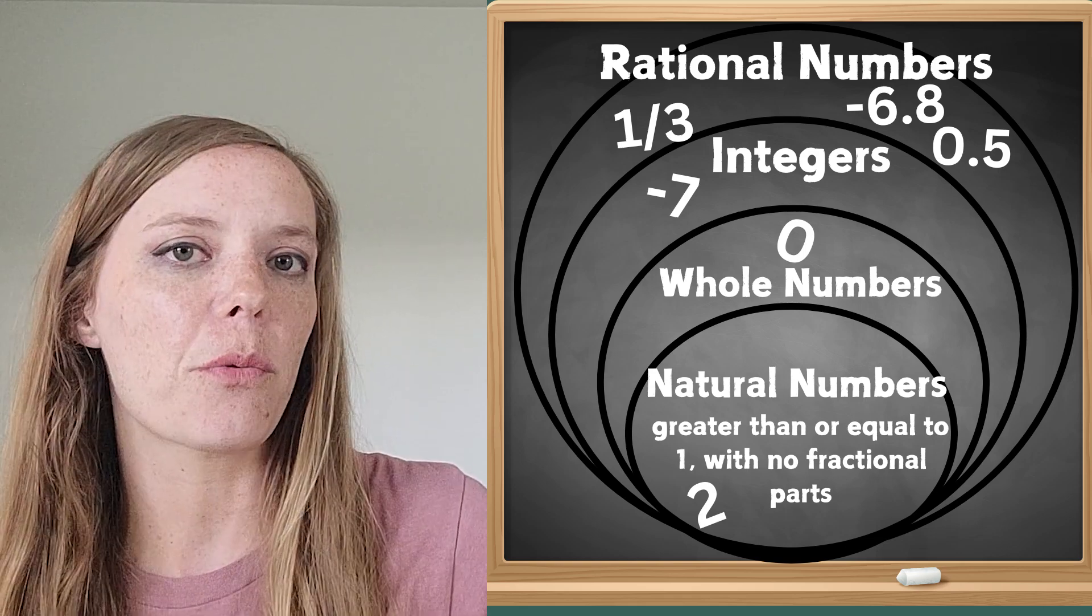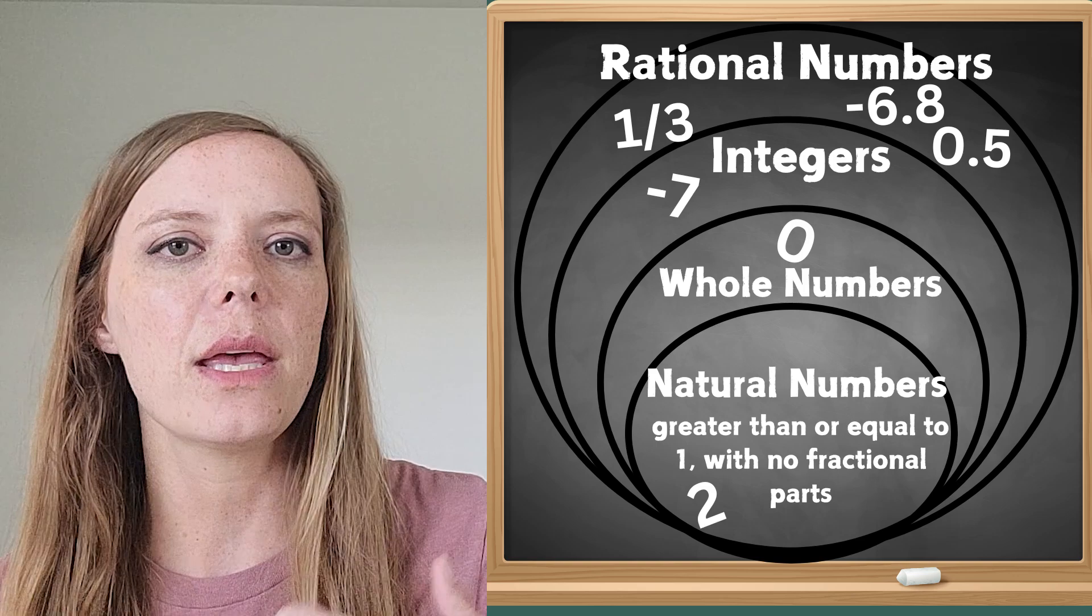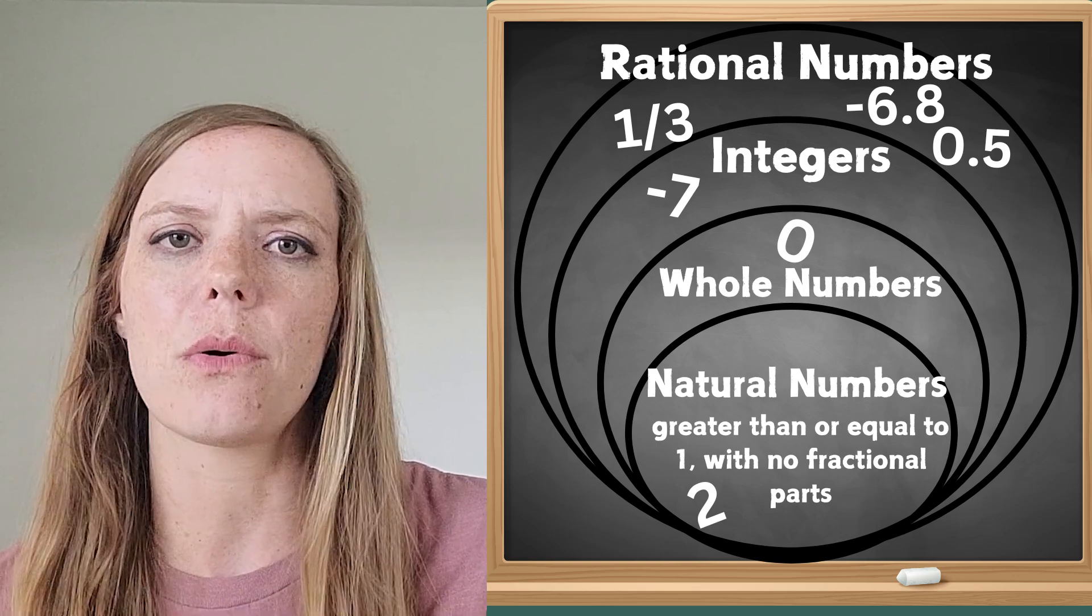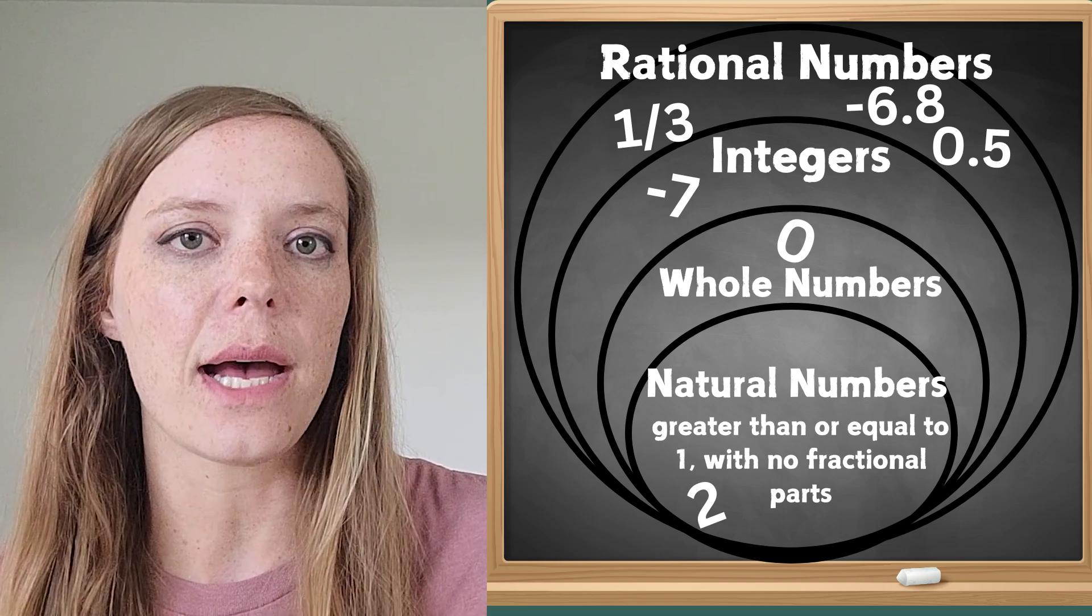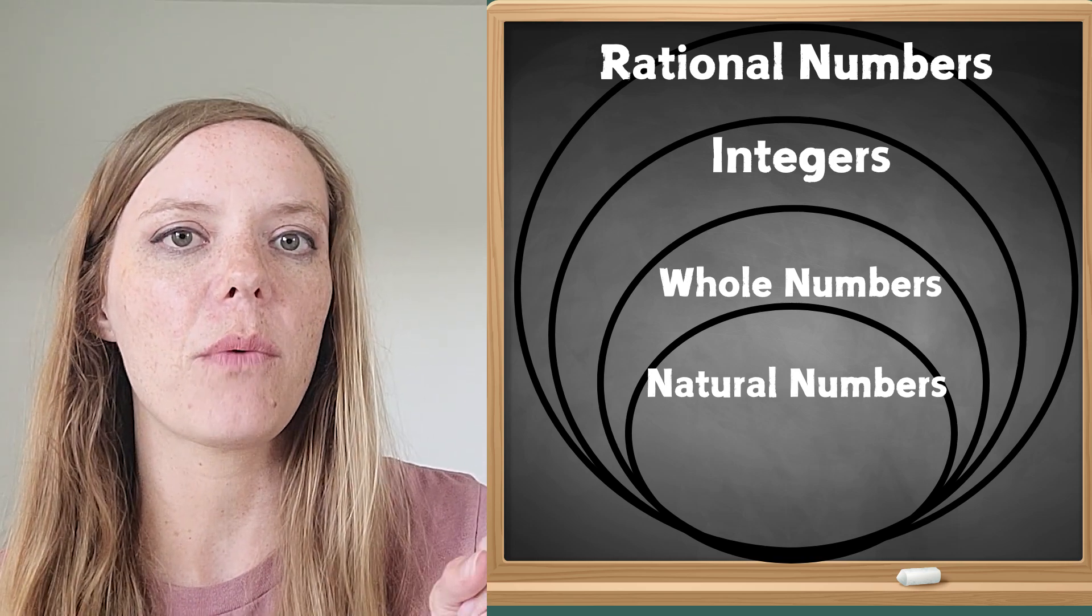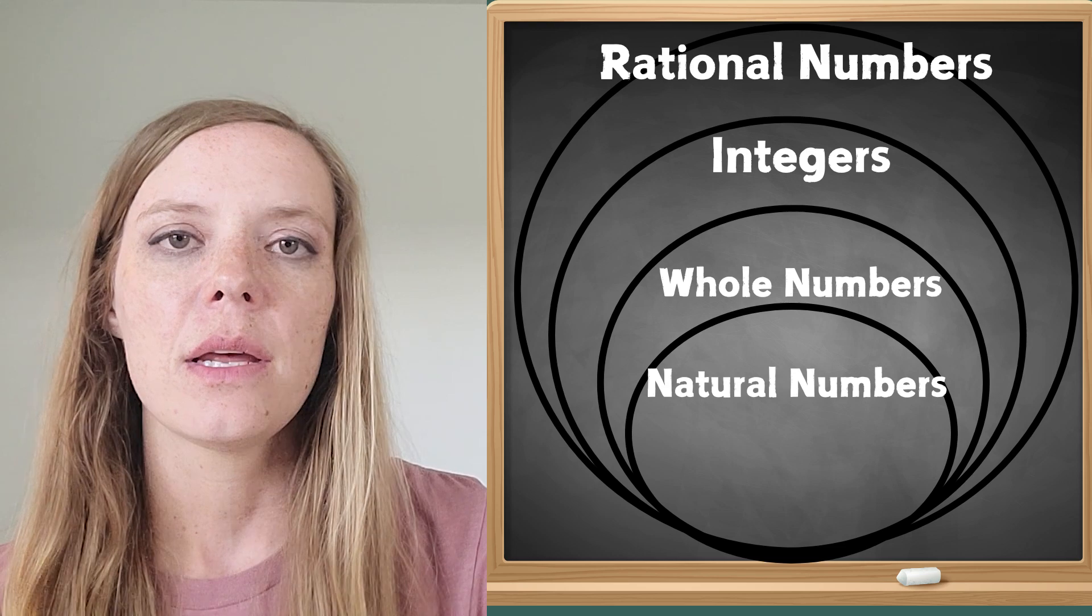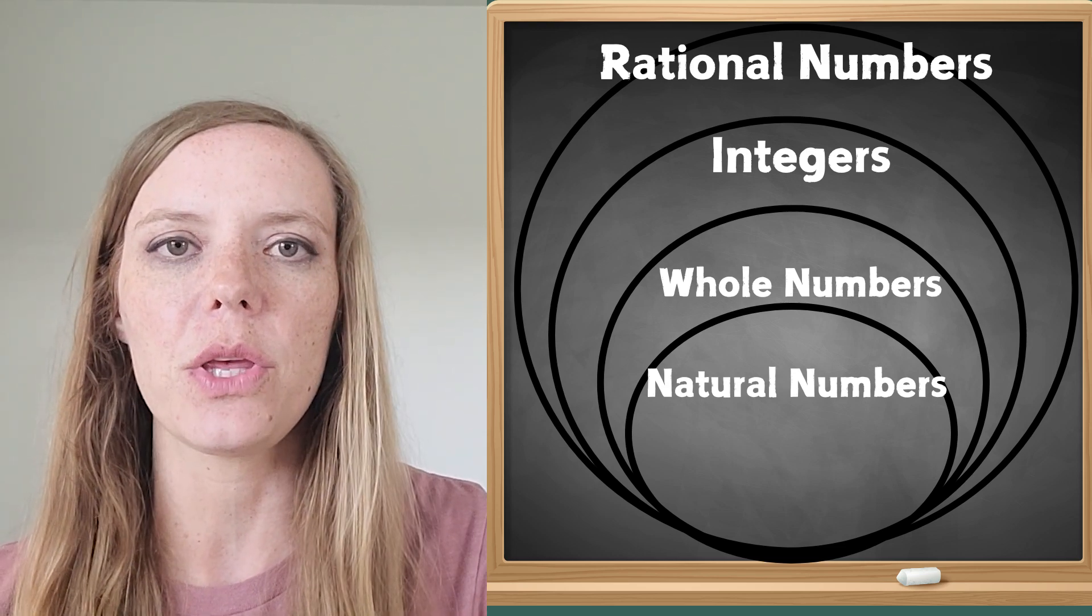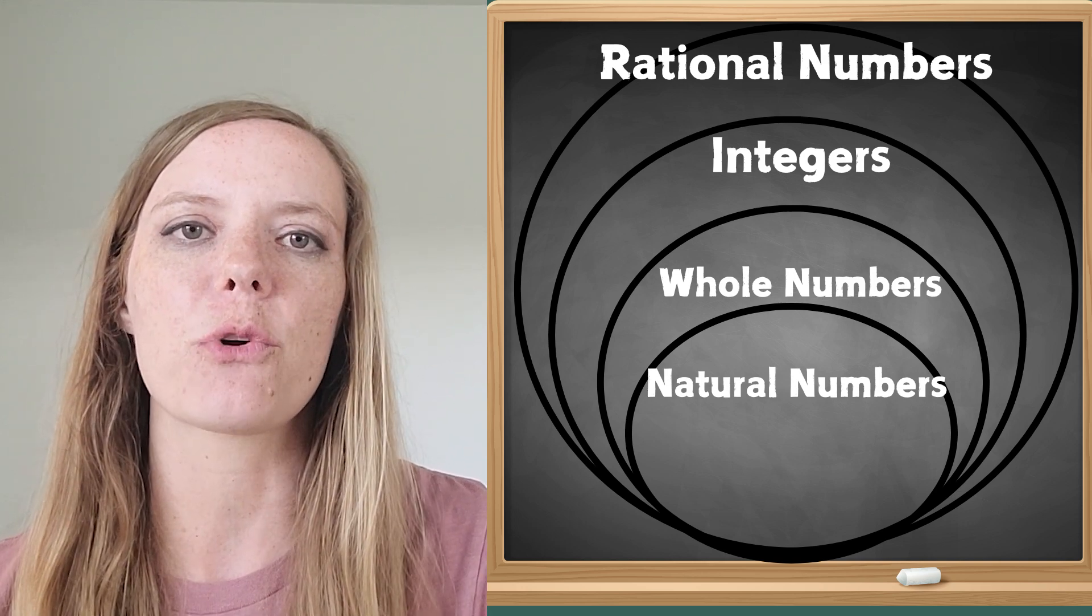Same goes for rational numbers. Rational number is the most broad term but then we can get more specific and say oh this is a whole number or a natural number or an integer as well as a rational number. All right so I'm going to give you some examples that I want you to try to figure out which circle we could put them in. Now of course all of these examples are going to be rational numbers so I want you to think of the most specific name for each of these.